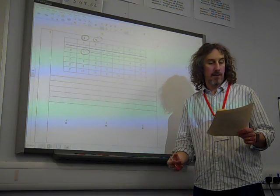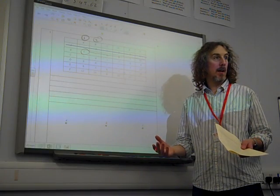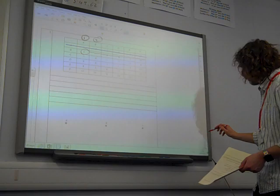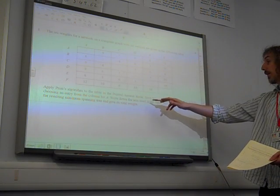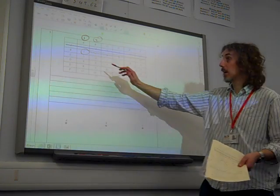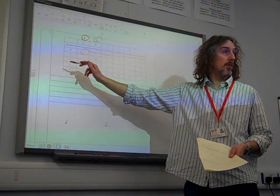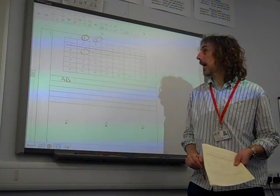Now, the question didn't particularly ask you for this, did it? But actually it did, didn't it? Did it say, give the, what did it say? Write down the arcs used in the order that they're chosen. There we go. And draw the resultant tree. So, actually, the order that they're chosen, we've just chosen the arc A, B. So, I'm going to write A, B down.